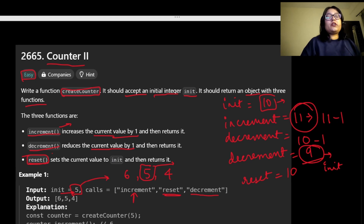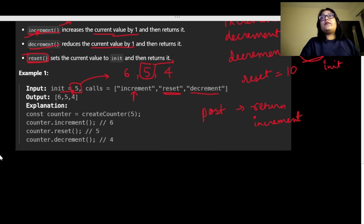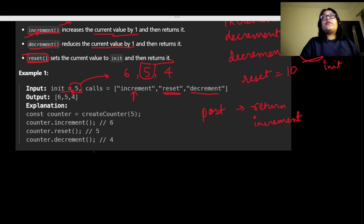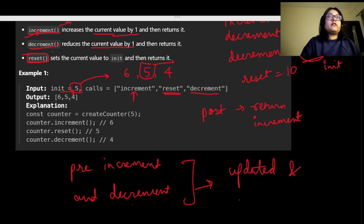In the previous counter question from Day 2, we used post-increment, where the value was returned first and then incremented. Here, we need to increment the value and then return it — so we will use pre-increment and pre-decrement. With pre-increment, the value is updated first and then returned.